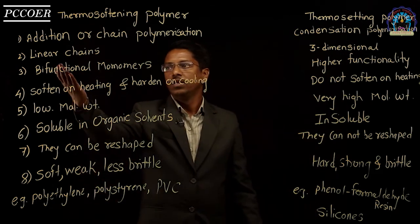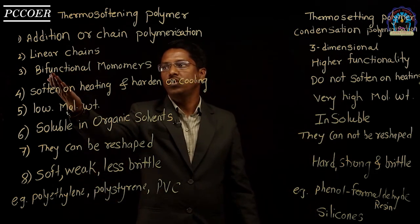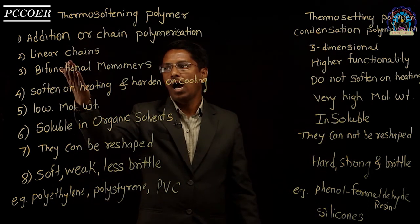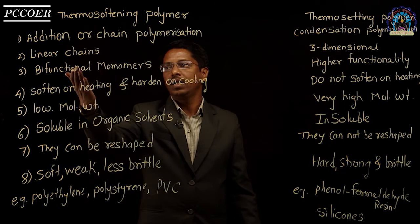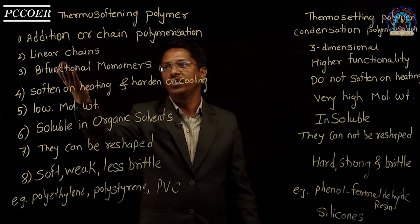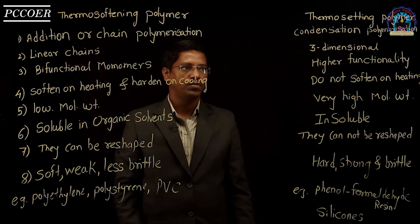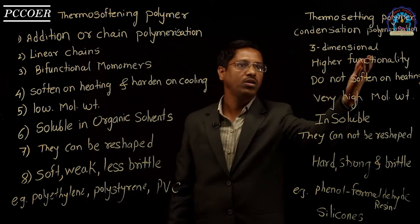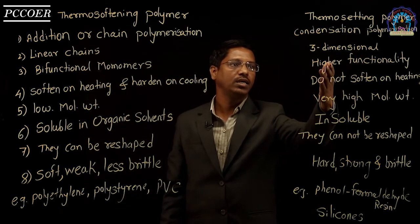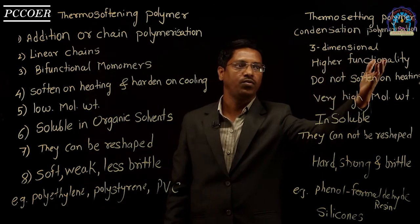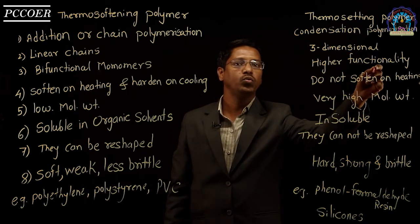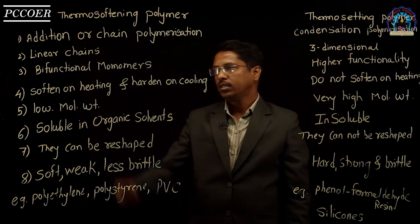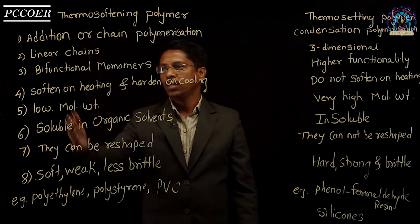Second difference: thermosoftening polymers generally consist of linear chains, while thermosetting polymers generally consist of three-dimensional networks due to cross-linking.